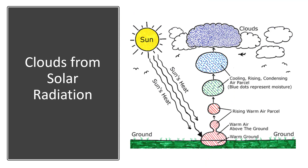Here is another graphic explaining this process. As the sun heats the ground, the ground heats up. Then the air above the ground heats up and rises. Since the troposphere cools with height, this warm air parcel cools as it rises. When moisture is present, the air parcel will condense and a cloud is formed.